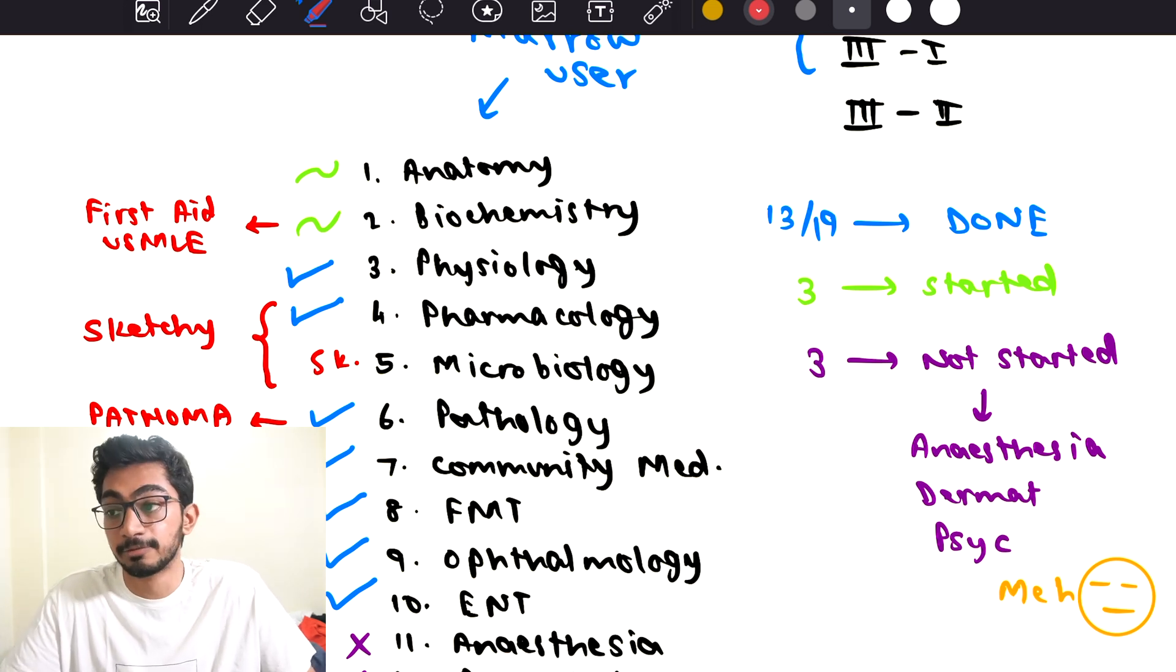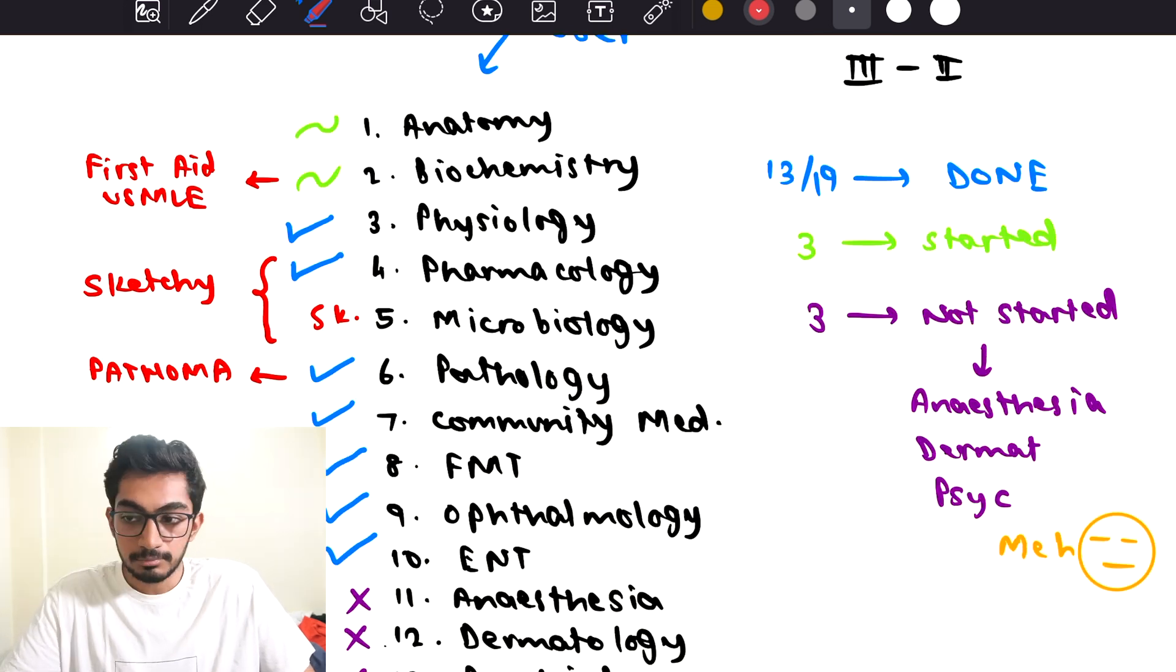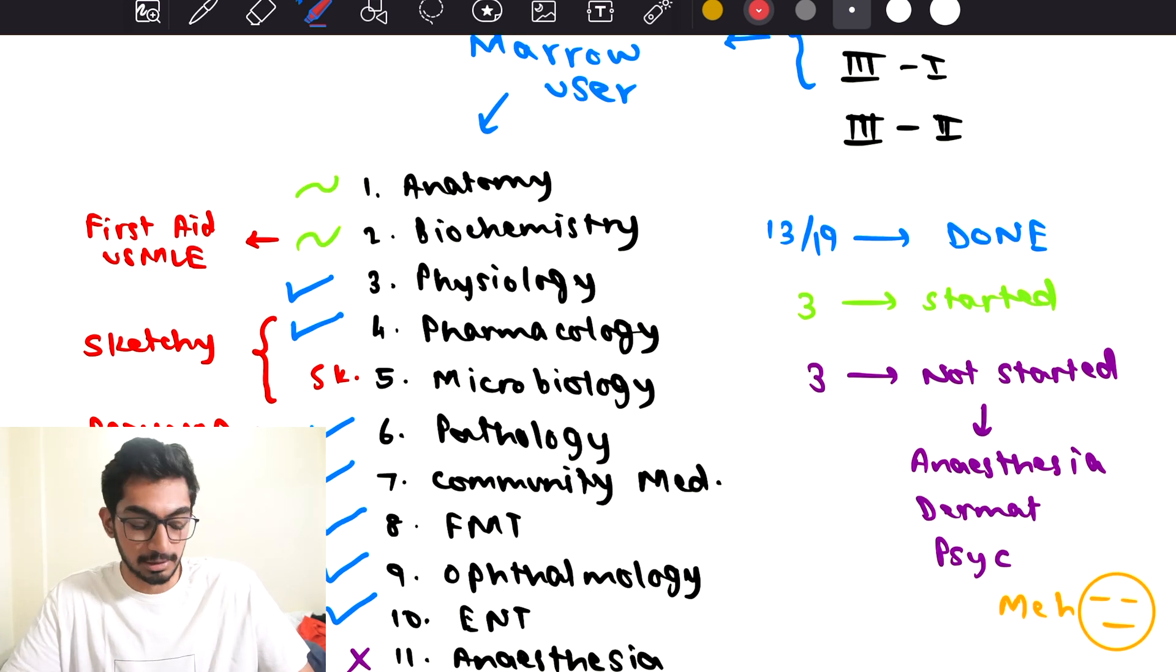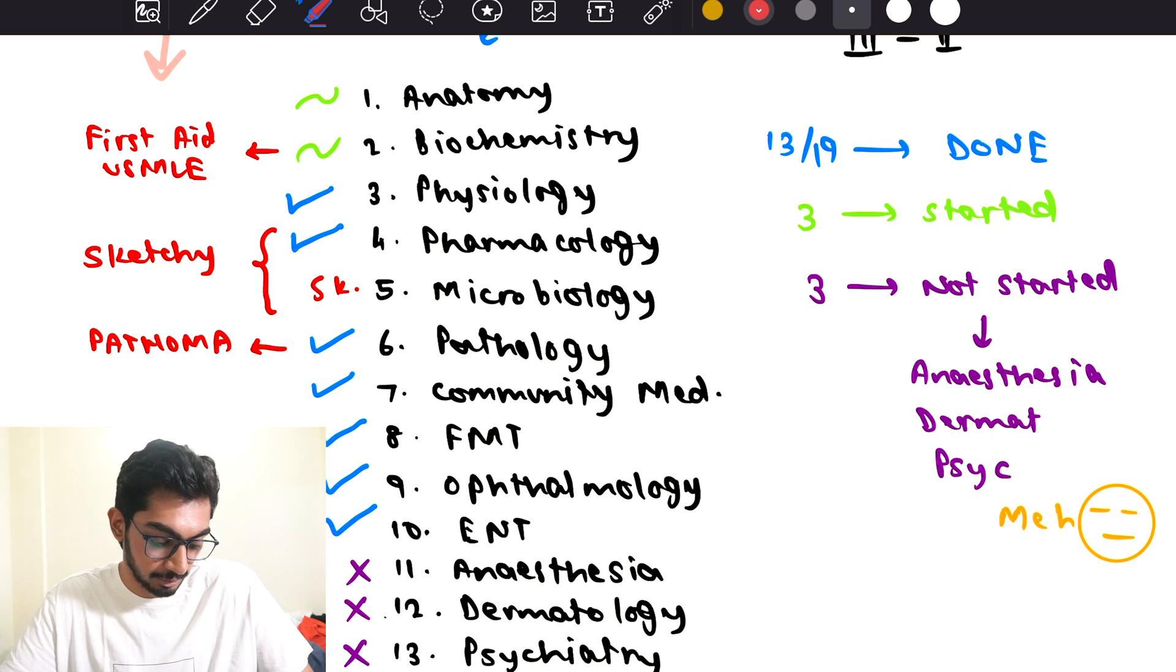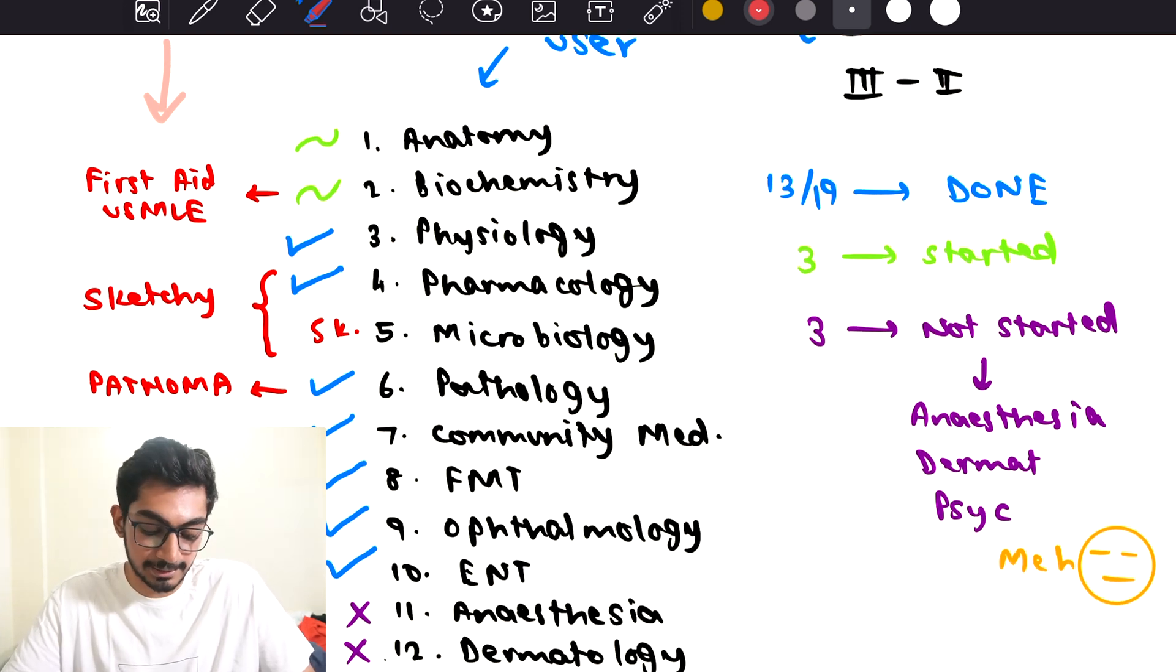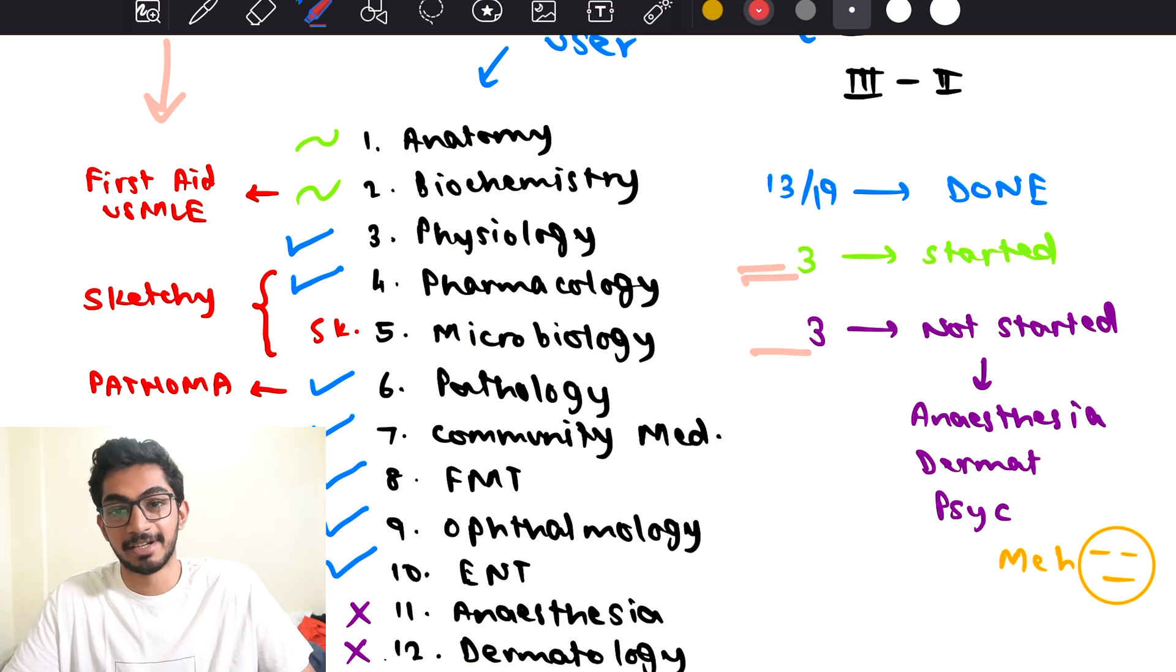I had also started using USMLE resources like First Aid for USMLE for Biochemistry, Sketchy Micro and Pharmacology, and Pathoma for Pathology. So out of the remaining six subjects, I had started three of them, and three I had not started, which were Anesthesia, Dermatology, and Psychiatry.